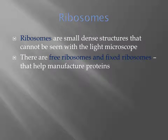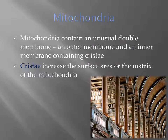Ribosomes are small dense structures that cannot be seen with a light microscope. There are free ribosomes and fixed ribosomes that help manufacture proteins. Mitochondria contain an unusual double membrane with an outer membrane and an inner membrane containing cristae, which increase the surface area of the matrix similar to bookshelves.